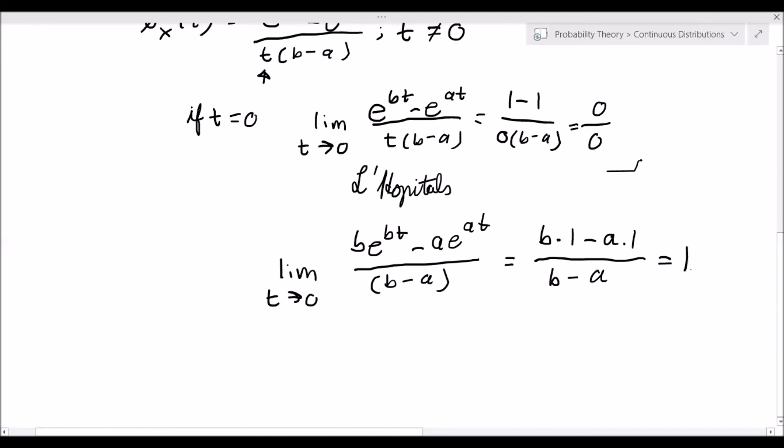So that's great. We have found out what the moment generating function is. The moment generating function for a random variable x which is uniformly distributed on the interval a to b is given by